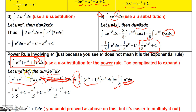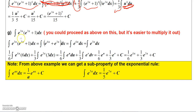In the last step, replace u with e^(3x) + 1, giving the final answer: (e^(3x) + 1)^5 divided by 15, plus a constant.